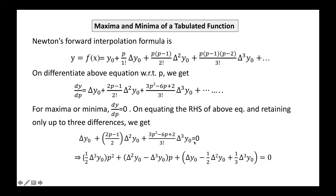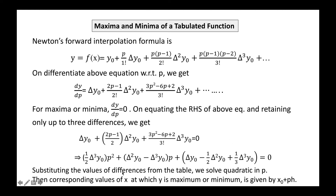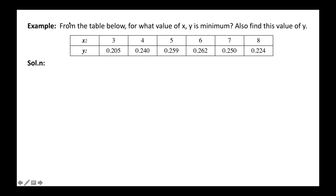Rearranging gives a quadratic equation in p. Substituting the values of differences from the table and solving the quadratic in p, the corresponding value of x at the maximum or minimum is given by x = x₀ + ph. You can use either the forward or backward difference formula and follow similar steps to find maxima and minima from a given set of data.